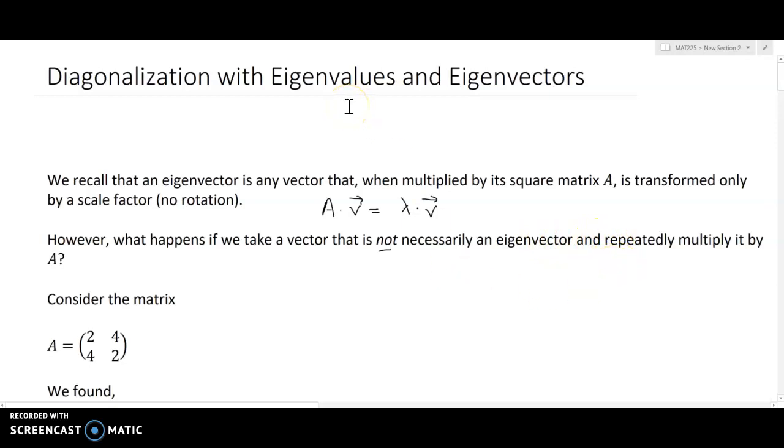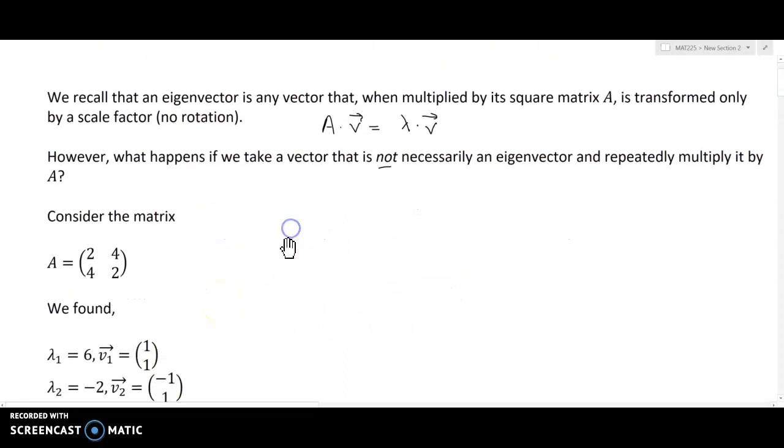So these are very special vectors, obviously, because they're very specific, and they have to have a certain structure in order for them to produce multiples of themselves on the output side. But what if we don't have an eigenvector? How does this scheme apply in the grander picture? So let's consider this matrix A equals 2, 4, 4, 2, which we've considered before.